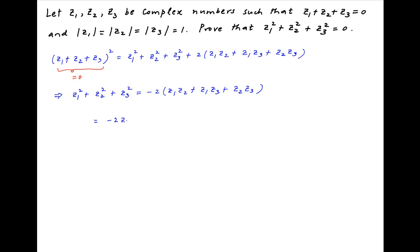Which can be written as minus 2 times z1z2z3 times in brackets 1 upon z1 plus 1 upon z2 plus 1 upon z3.